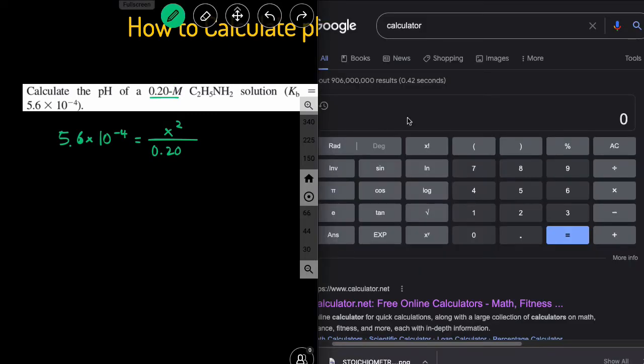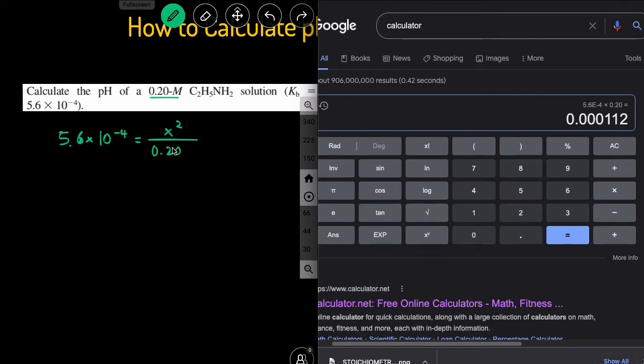Then let's cross-multiply. So let's move on to the calculator right here. We'll do 5.6 times 10 to negative 4. We're going to cross-multiply by 0.2, and we get that. Then after we get rid of the 0.2 by cross-multiplying, we're going to take the square root of both sides.